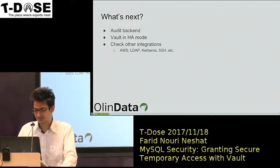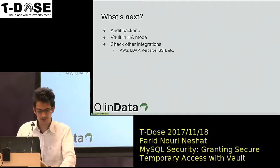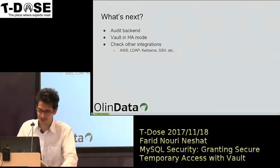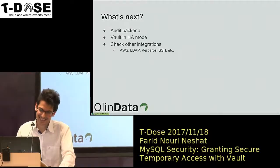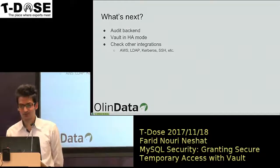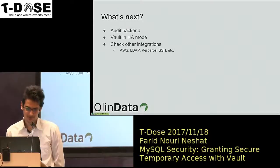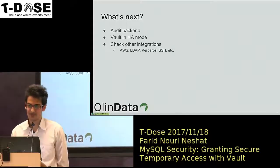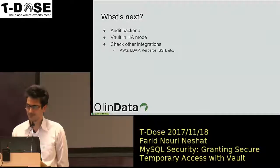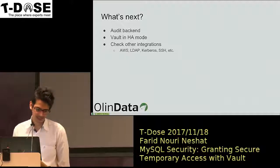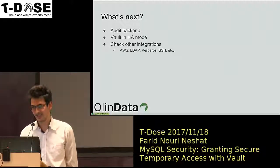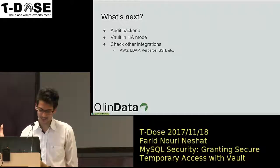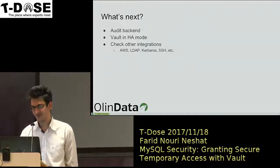There are a lot of integrations — like I said, you can have AWS or LDAP, which a lot of organizations use. An interesting use case is also to generate SSH certificates. For example, somebody in your organization wants to access a server: they connect to the Vault API, request a certificate, Vault gives them a certificate, and they can use that certificate to connect to the SSH server.